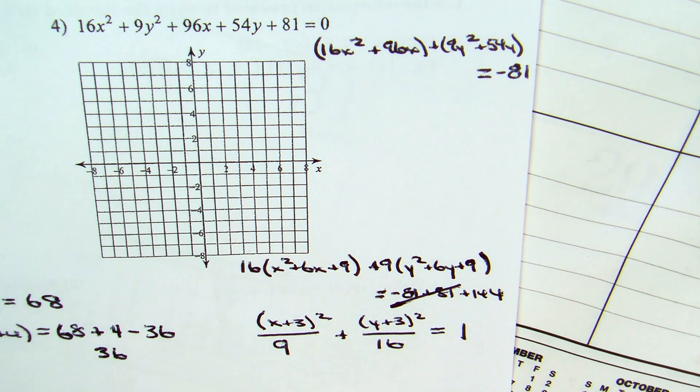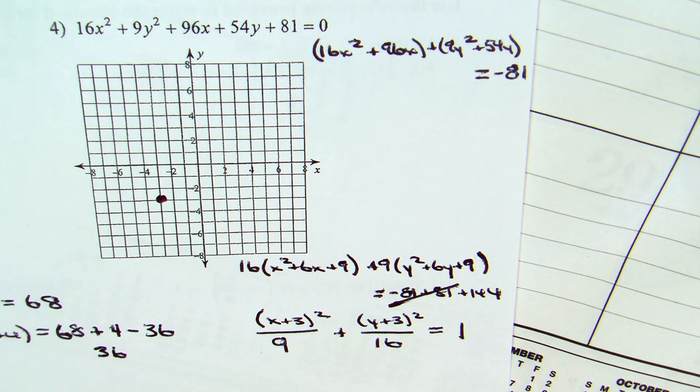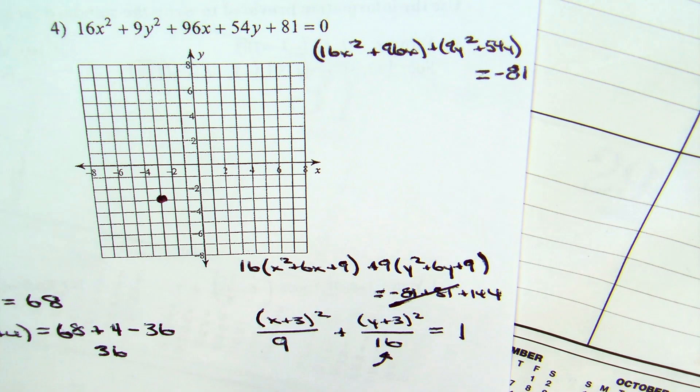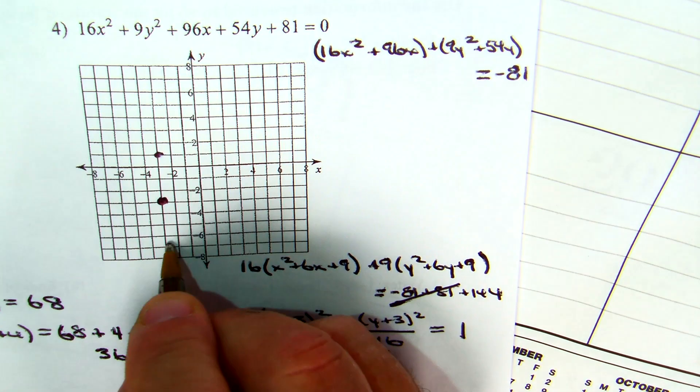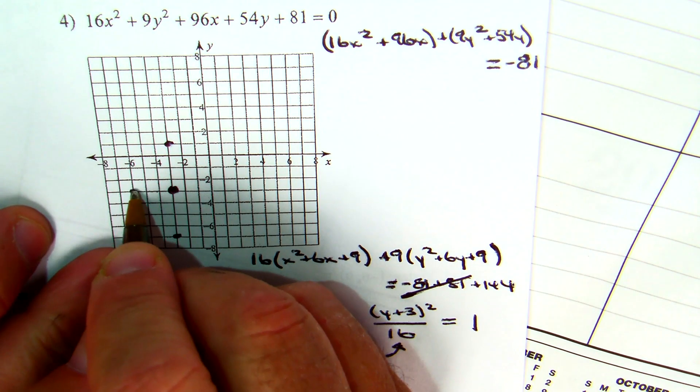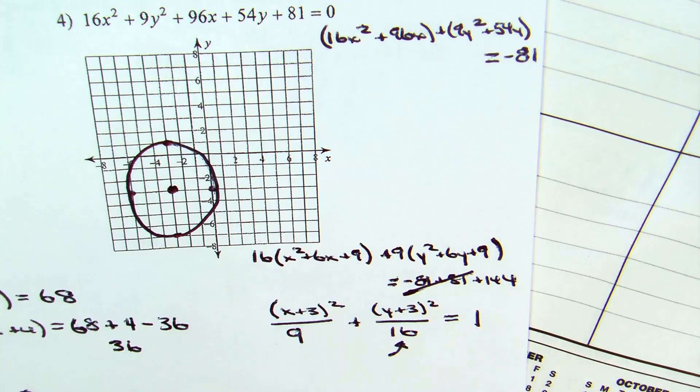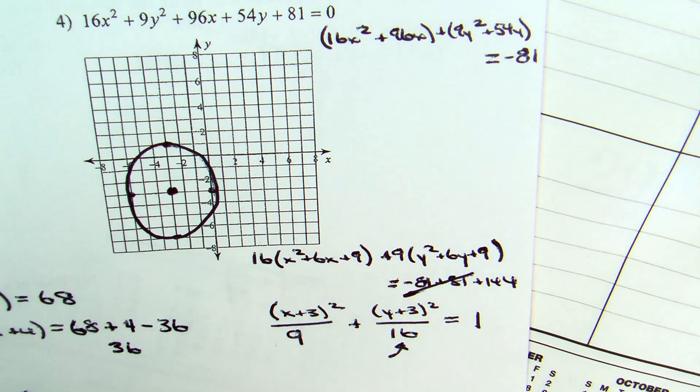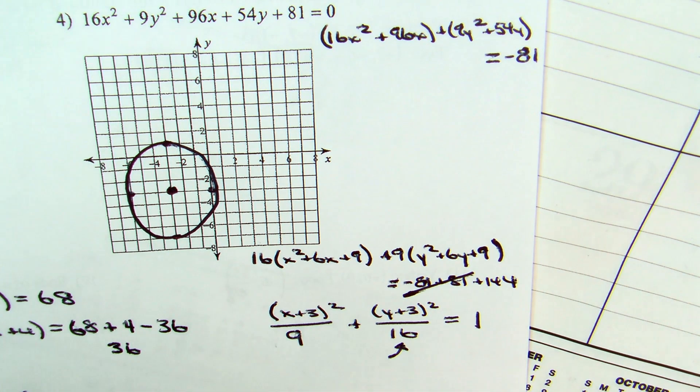That puts my center at the opposite of plus 3 for both, which would be negative 3, negative 3. Those are my vertices, since 16 is bigger. What's the square root of 16? 4. So, I'm going up 4, down 4. Square root of 9 is 3. So, I'm going over 3 in both directions and connecting the form and the rest. Good? Good? Alright. Thank you.